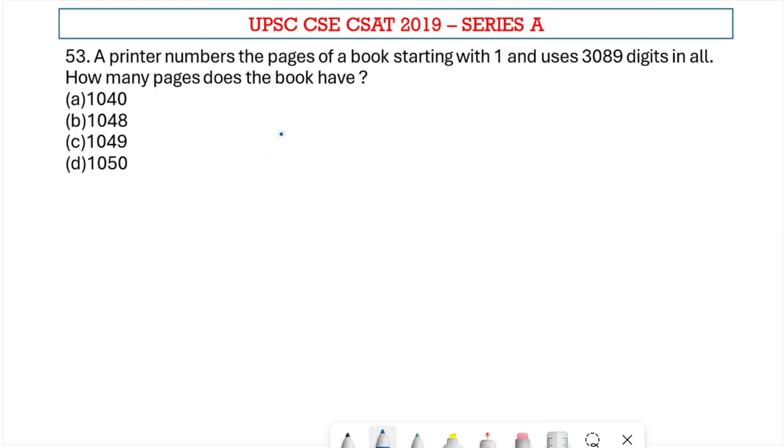Welcome to Aptitude Destination. Please pause the video and read the question completely. A printer numbers the pages of a book starting with 1 and uses 3089 digits in all. How many pages does the book have?